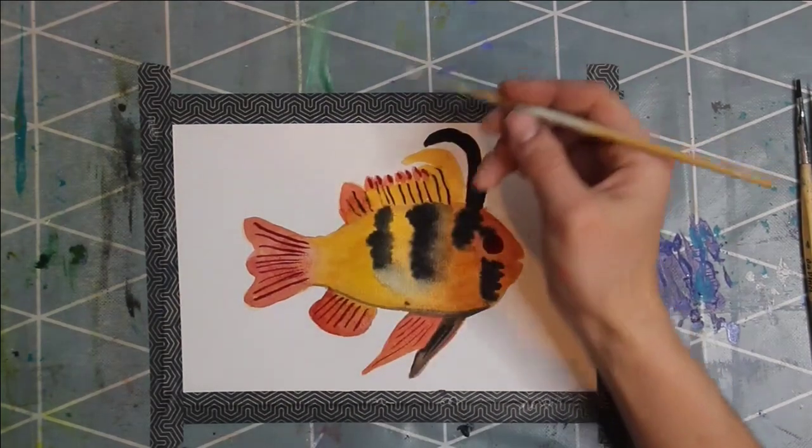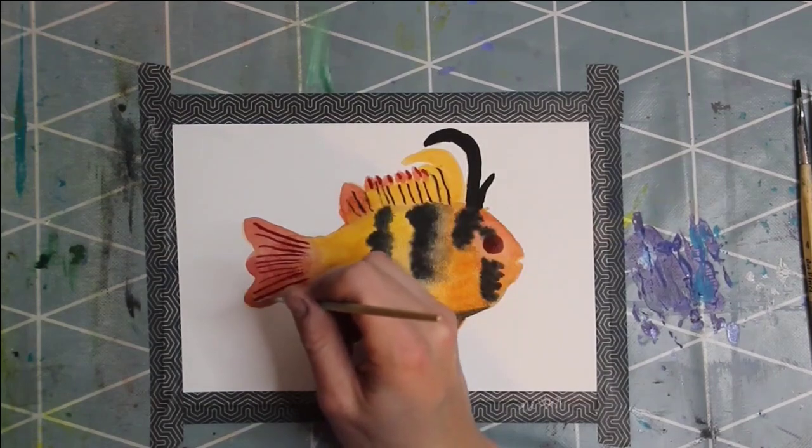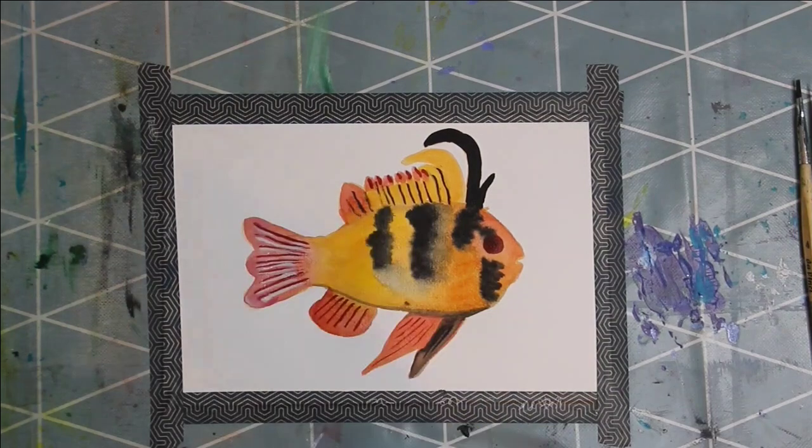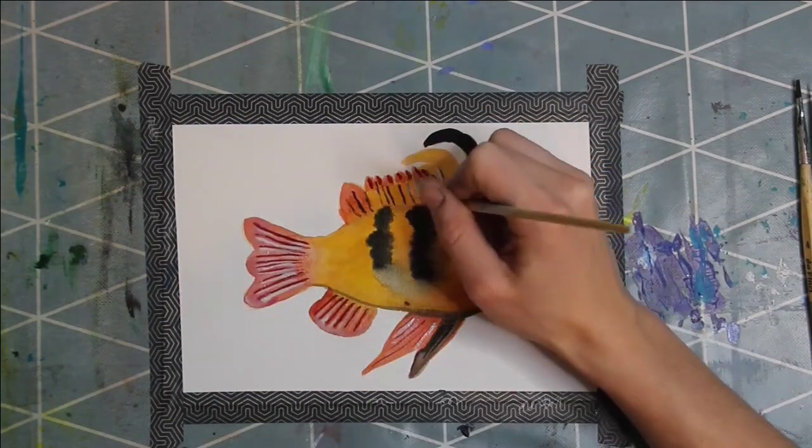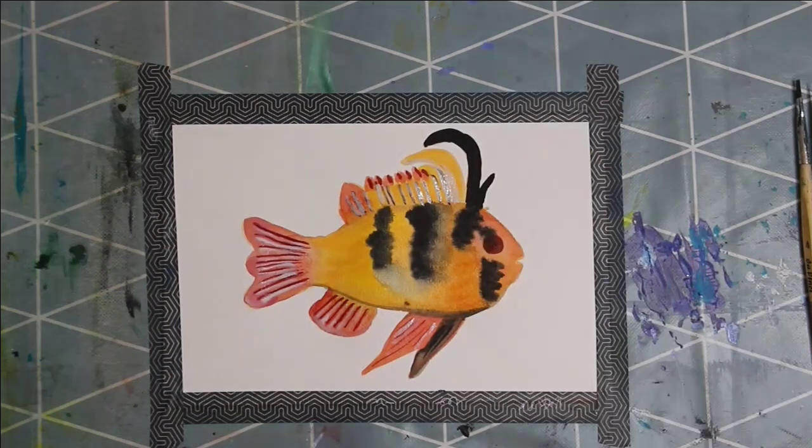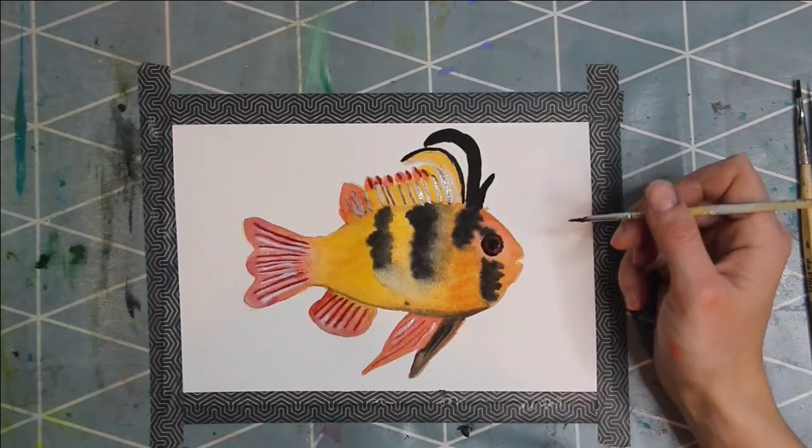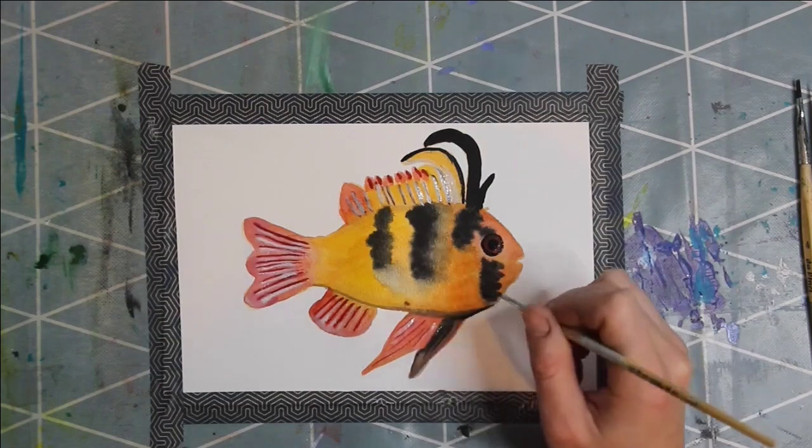Then I use white for drawing lines on every fin of the fish. Then I draw the black pupil. As a next step I will use a brush for putting dots on the fish.